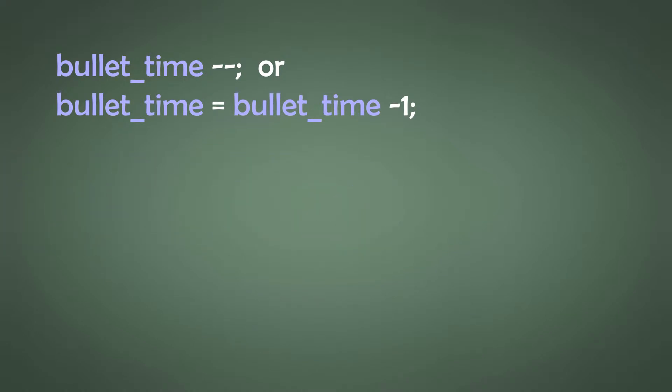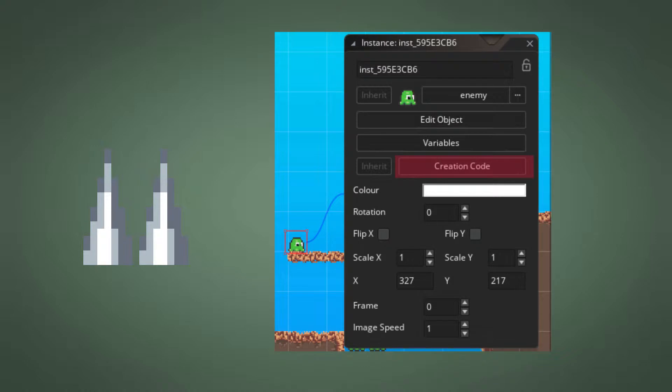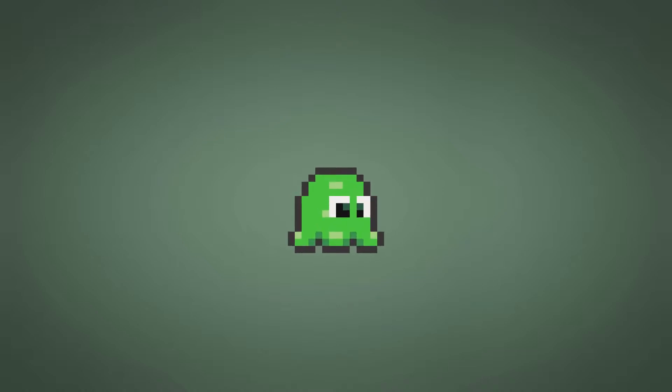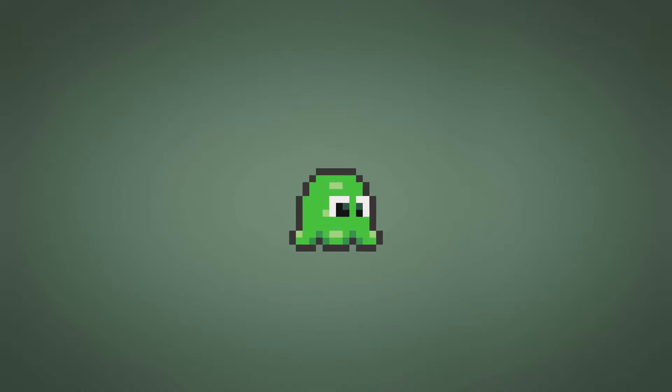And now comes the last regular enemy: the spike. It is a lazy but not very effective approach, but hey, why not. We go instantly to the creation code in the level, set up the type as spike, give it a very large pool of HP, and change its image index to that of the spike. Currently every enemy has a wobbling distortion to mask that it doesn't really animate at all, so simply add an if statement so the spike won't wobble.